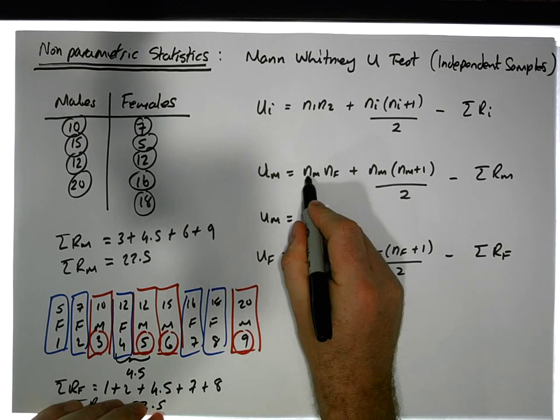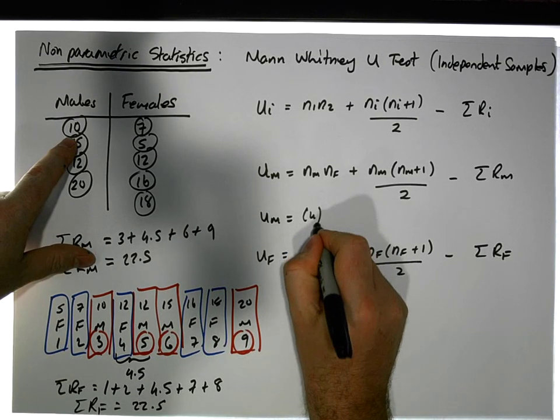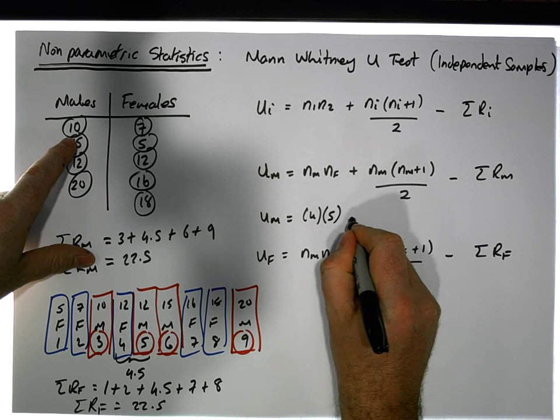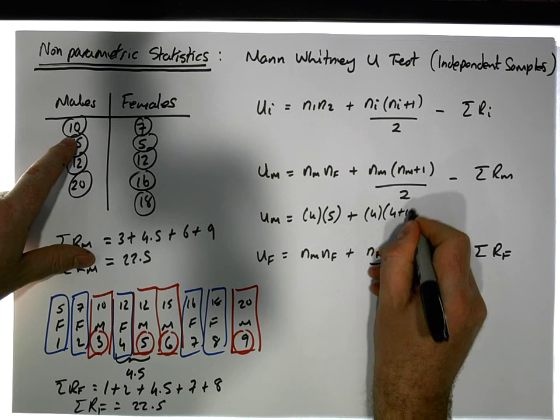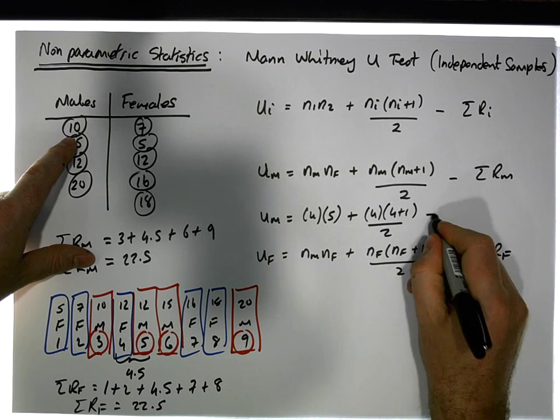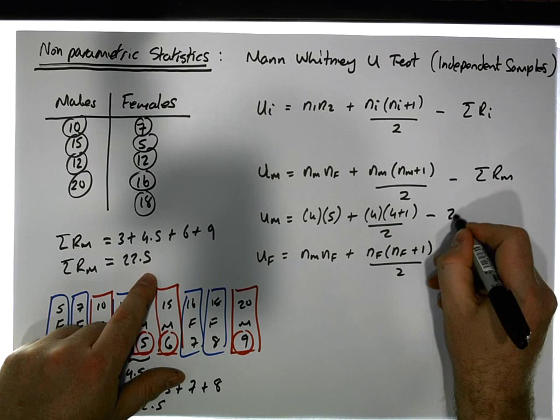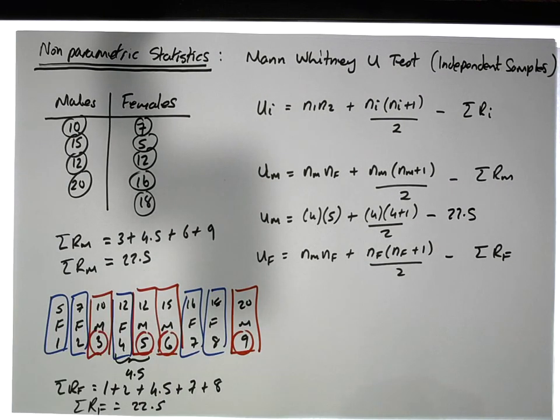We have U of M is equal to the sample size of the males, which is 4, times the sample size of the females, which is 5, plus the sample size of the males, which is 4 times 4 plus 1, divided by 2.